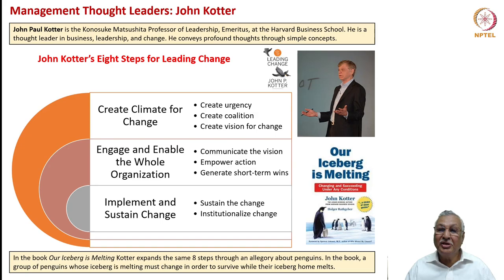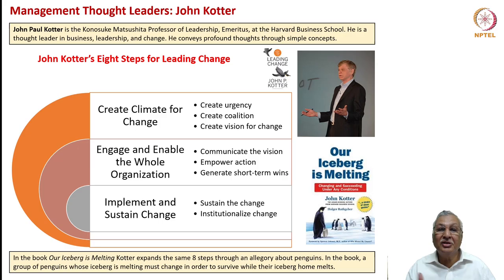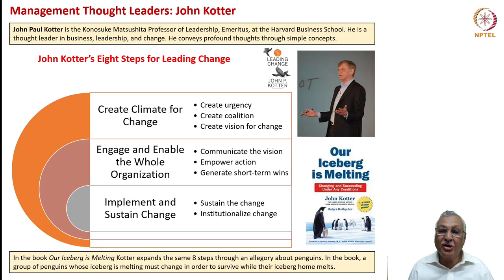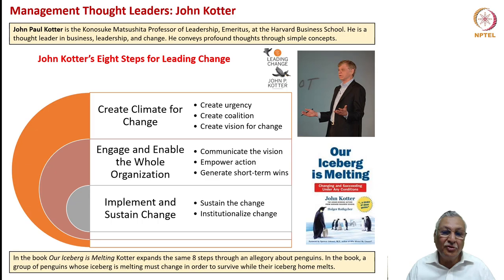John Kotter is a great management thought leader who talked about leading change. His books Our Iceberg Is Melting and Leading Change are recommended as simple fable-based books that drive home very important messages. He identified eight steps for leading change in organizations. First, create a climate for change: build urgency about the need for change; create a broad coalition of departments and people who will drive this change owning it; and create a vision for the change. Changing an organization's and a leader's mindset is the most difficult challenge an apex leader faces.